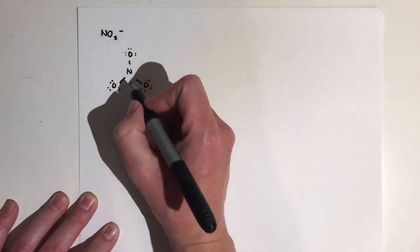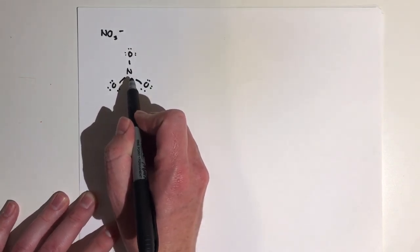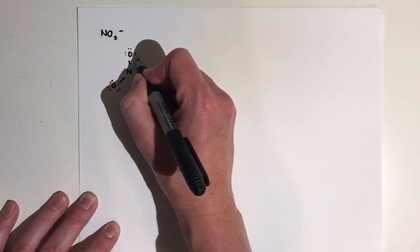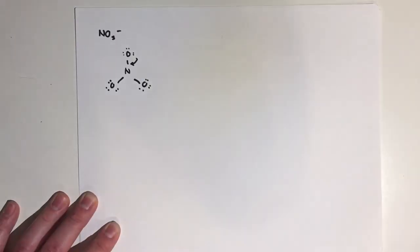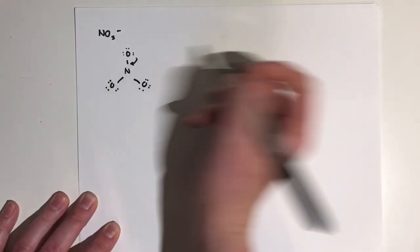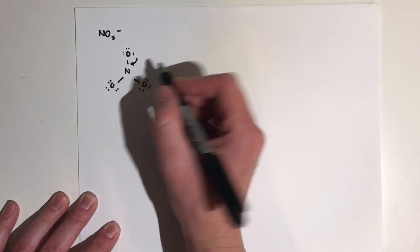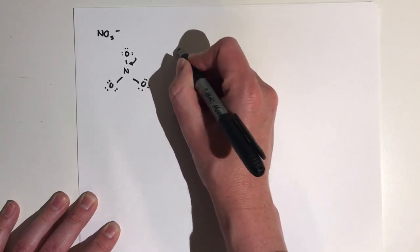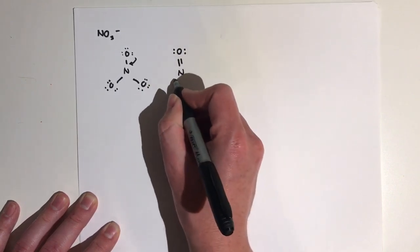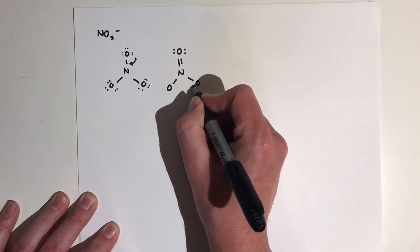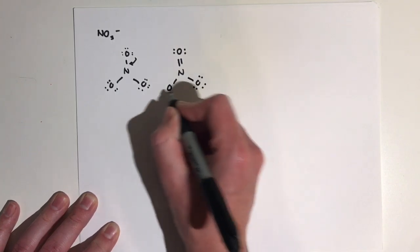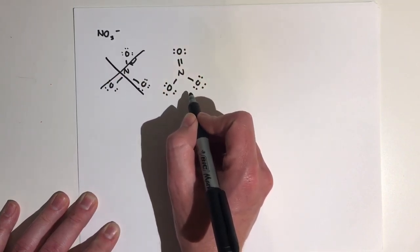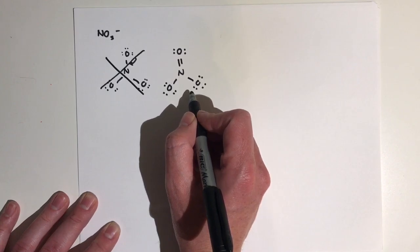So we have all our electrons, but you'll notice that our nitrogen atom in the middle doesn't have a full octet, and it wants a full octet. So if we move one of these lone pairs down to be a pair of bonding electrons, that's going to give us an N in the middle, a double bond here, this oxygen with two pairs of lone pairs, and then the other two oxygens each with three sets of lone pairs. So that's going to be our Lewis structure for NO3-.